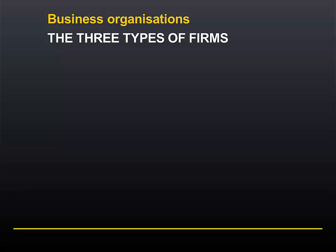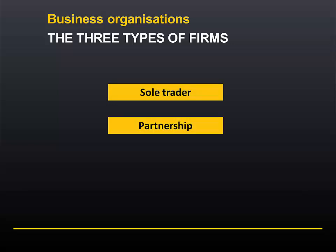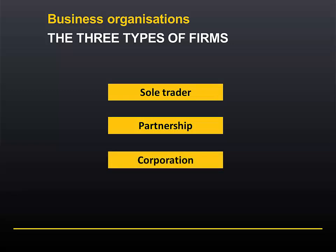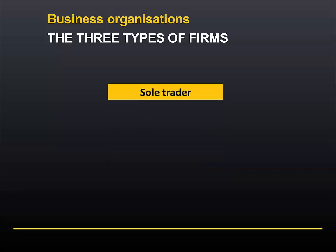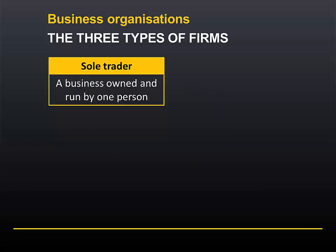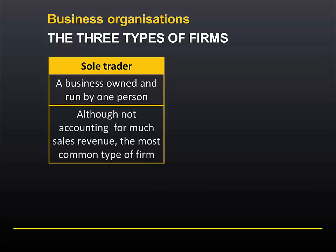There are basically three types of firms: sole traders, partnerships, and corporations or companies. A sole trader is a business owned and operated by one person. These businesses don't account for much in total sales revenue, but they are the most common type of firm in the world.